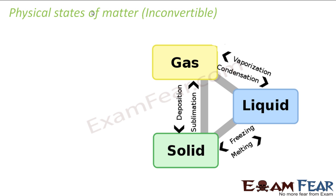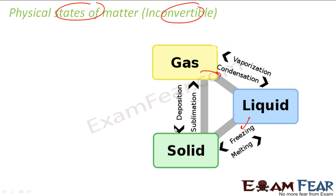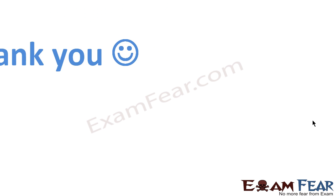Note that these states of matter are interconvertible. Starting with a solid, if you heat or melt it, it becomes a liquid. If you heat it further, it becomes a gas. If you condense a gas, it becomes a liquid, and if you freeze the liquid, it becomes a solid. Also, by sublimation a solid can go directly to gas, and by deposition a gas becomes solid. So most matter can be converted from solid to liquid to gas and back.